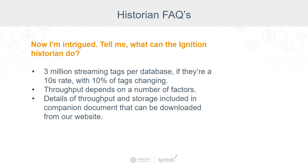What can the Ignition historian do? So, 3 million streaming tags per database. If you're looking at a 10-second rate and 10% of tags changing, the numbers that really matter are the number of tag changes per second. We have a companion document you can download from our website with a lot of these benchmarks. A 10-second rate and 10% of tags changing is pretty typical for a lot of applications. Some industries require faster rates or larger percentages of tags changing, so that number scales — and that number is per database, so you can have multiple databases that all work together.